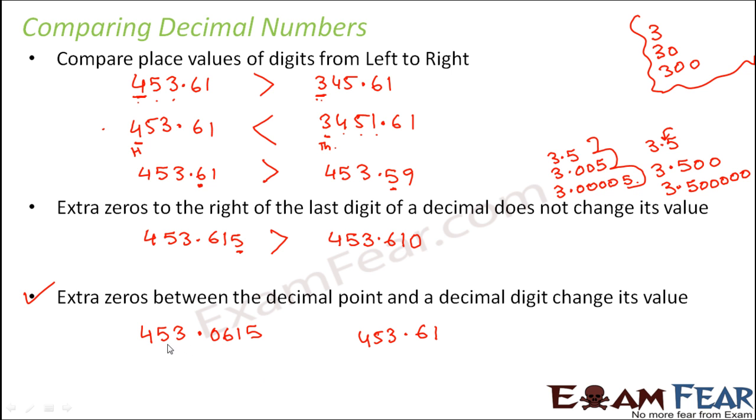Now you start comparing digit-wise from left to right. 453, here also 453. After the decimal point, the first digit here is zero. The first digit here is six. So six is definitely greater than zero. Therefore this number would be greater.